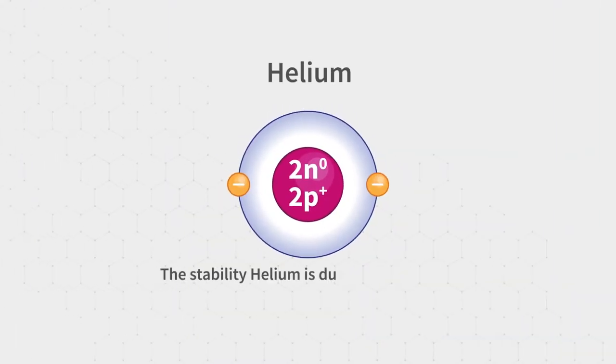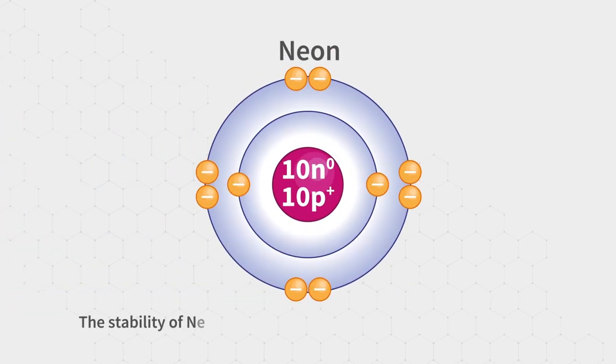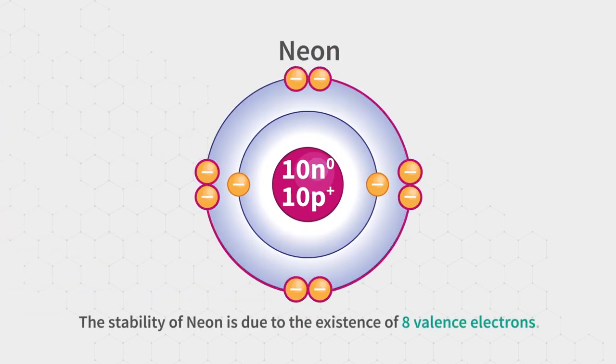The stability of helium is due to the existence of two electrons in its outermost shell, valence electrons. The stability of neon is due to the existence of eight valence electrons.